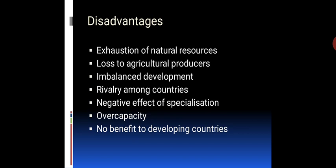Another disadvantage is imbalanced development — in international trade, countries produce only those products in which they have comparative advantage. Therefore, some industries or sectors are developed while others are neglected. There is also rivalry among countries — countries compete with each other to capture a greater share of the world market. Furthermore, specialization, though providing many benefits, also has disadvantages — other industries may not be developed.